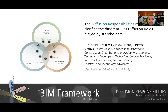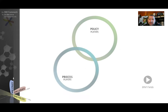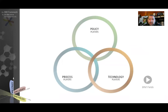The model uses the BIM fields, which was introduced earlier in a separate video, to identify nine different player groups. Please refer to the BIM fields video, which covers interlocking policy, process, and technology fields. If you remember from that video, these fields could either cover players, their deliverables, or their requirements. In this instance, we are covering players. These fields overlap, and in the overlap there are areas which also help us identify different types of players.